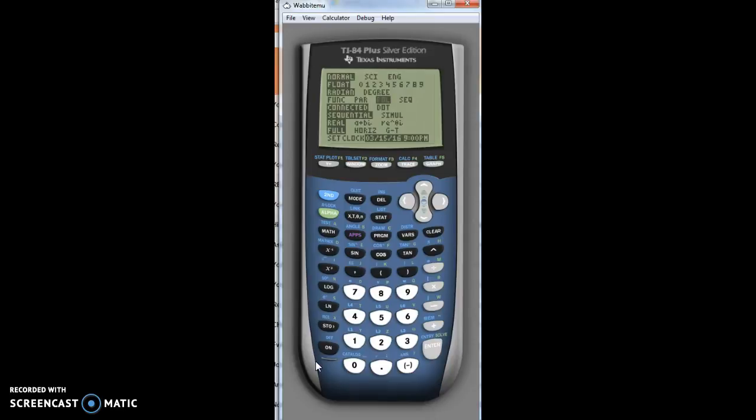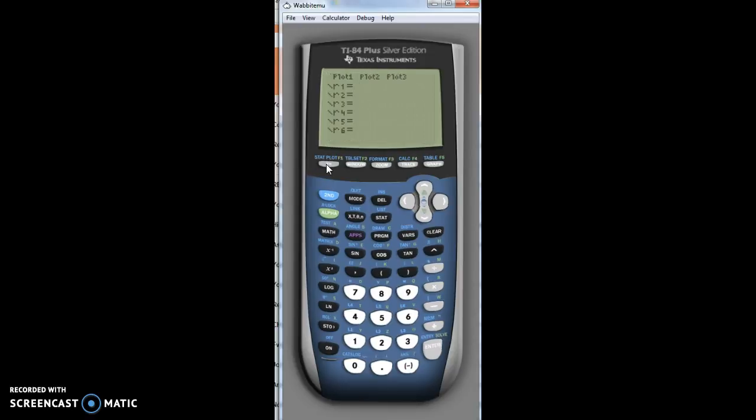This is a quick lesson on how to do some graphs on the calculator. So first you're going to go to Mode and make sure that you are in Radian and Polar mode. And then when you hit Y equals, you'll see that instead of a Y, you have R.